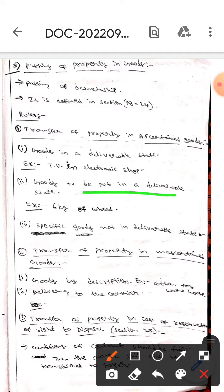The next one is goods to be put in a deliverable state. Example 6 kg of wheat. It should be put in a deliverable state now.